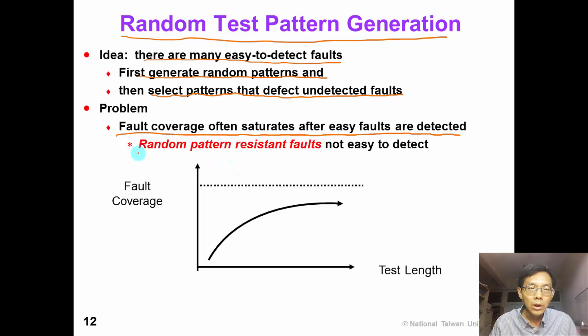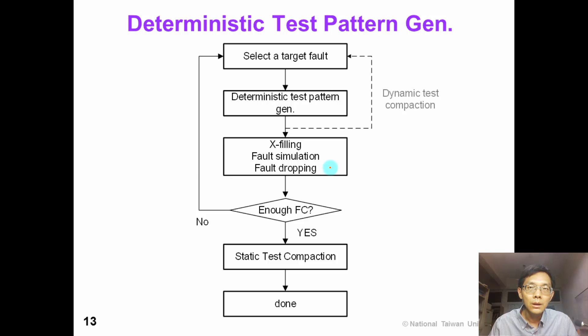We talked about random pattern resistant faults in our previous chapter. After the fault coverage saturates, we still have a big gap between our satisfactory fault coverage and the current fault coverage. These faults are due to random pattern resistant faults. So, we would need to move on to deterministic test pattern generation.